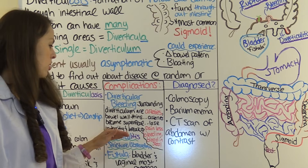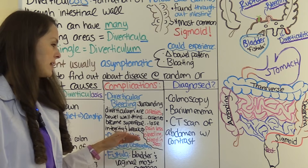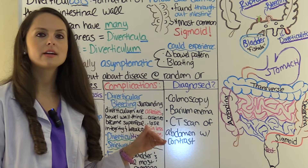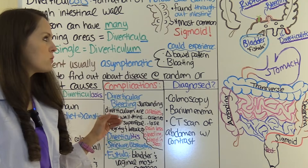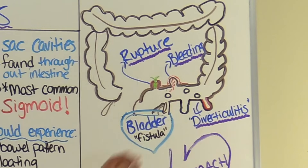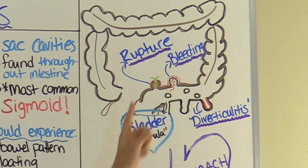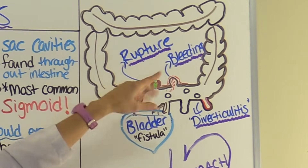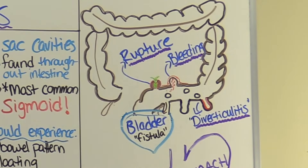Another complication is called diverticulitis, which we'll talk about in depth in a moment. This is where one of these herniated pouches becomes inflamed — that's where you get the '-itis' part. This causes the patient a lot of pain, and an abscess can form. It can rupture its contents into the abdominal cavity, causing peritonitis and sepsis.